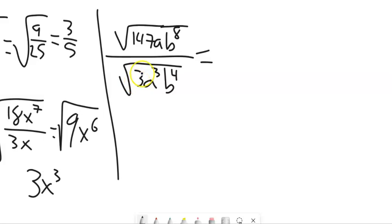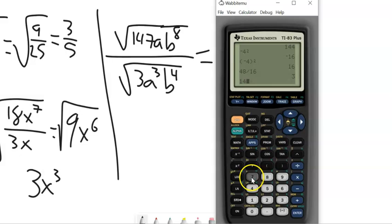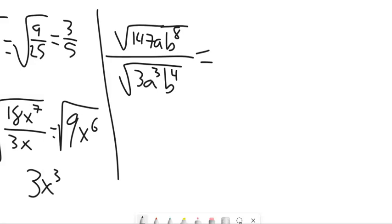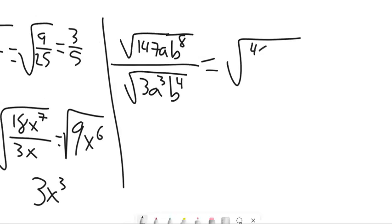Similarly with this one, 147 divided by 3. I'm just going to cheat. I mean, use my resources. 49. Oh, that's nice. So this is 49, a divided by a cubed leaves me an a squared. Sorry, I forgot about the denominator there. b to the 8th over b to the 4th leaves me a b to the 4th up top. Square root of 49 is 7. Square root of b to the 4th is b squared. Square root of a squared is a. And there it is, simplified.